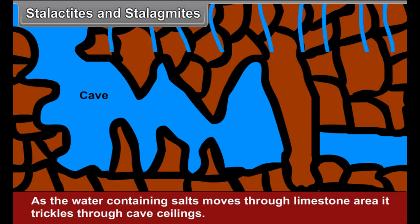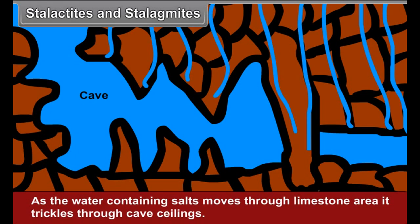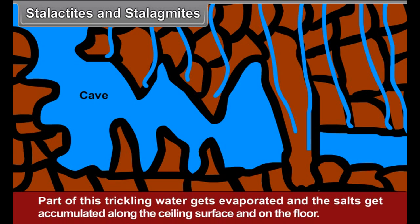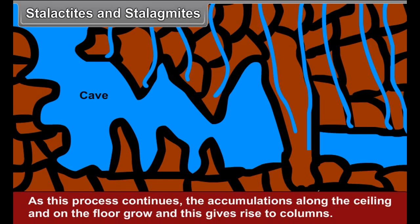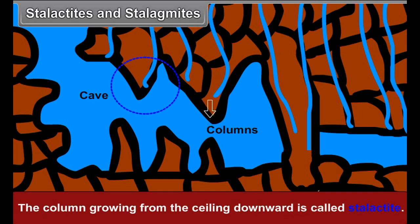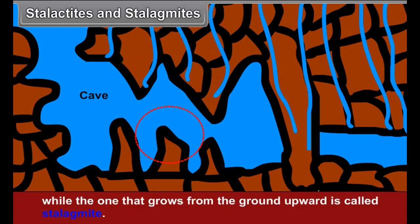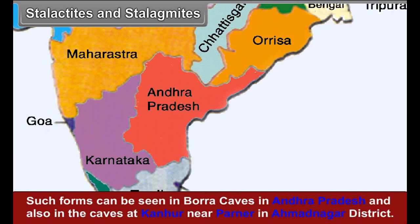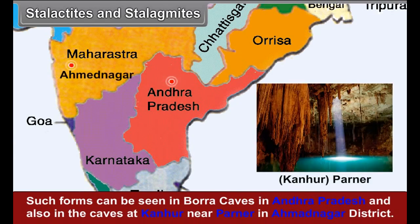Stalactites and Stalagmites: As the water containing salts moves through a limestone area, it trickles through cave ceilings. Part of this trickling water gets evaporated and the salts accumulate along the ceiling surface and on the floor. As this process continues, the accumulations grow and give rise to columns. The column growing from the ceiling downward is called a stalactite, while the one that grows from the ground upward is called a stalagmite. Such forms can be seen in Bora Caves in Andhra Pradesh and in the caves at Kanhor near Parnir in Ahmadnagar district.